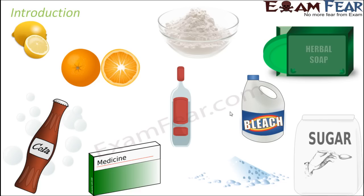Not only these items — a lot of edible items we consume also contain some acids and some bases. For example, curd: we all consume curd either in raw form or in dishes, and curd contains an acid called lactic acid. We all eat spinach, which is also acidic in nature and contains oxalic acid. So many things contain these acids, and a lot of things contain bases.